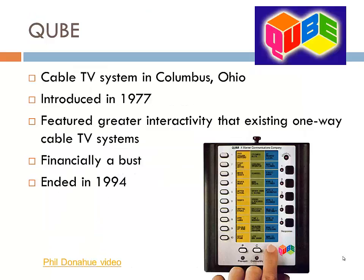One attempt to think about how technology might make democracy stronger was a cable TV system called Cube, introduced in 1977 in Columbus, Ohio. This system allowed for much greater interactivity between the viewer at home and the cable channel that offered the services. Unfortunately, the system was financially unsuccessful and the experiment ended in 1984.